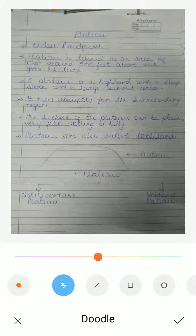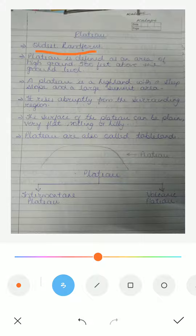Let us start with today's topic, that is plateau. A plateau is the oldest landform. It can be defined as an area of high ground around 50 meters above the ground level. A plateau is a high land with a steep slope.